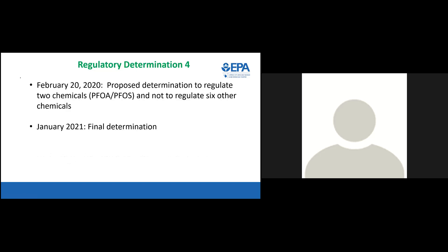We are in cycle four. On February 20th, EPA put out a rulemaking proposing to regulate two chemicals — PFOA and PFOS — and not to regulate six others. We announced that we have moved forward on a final determination that will regulate PFOA and PFOS and not regulate these six other chemicals. It is not yet published in the Federal Register, but the agency has announced it and it is up on our website.